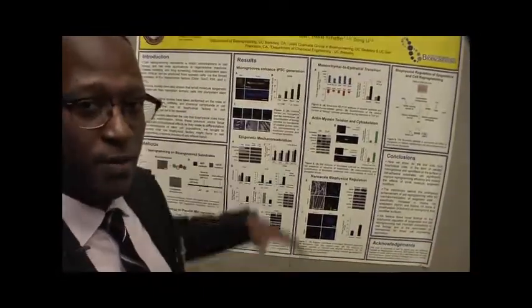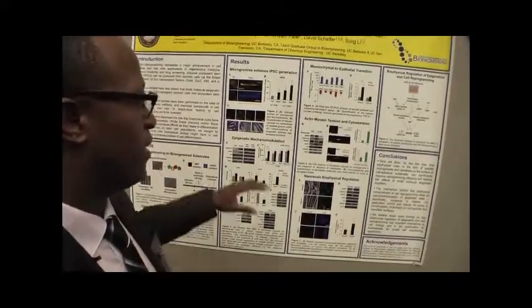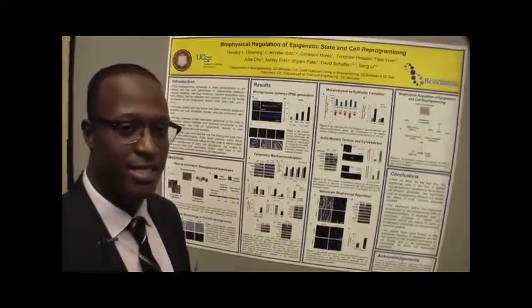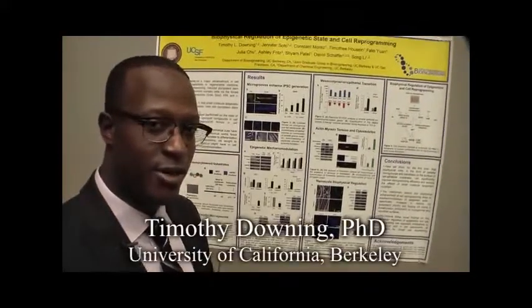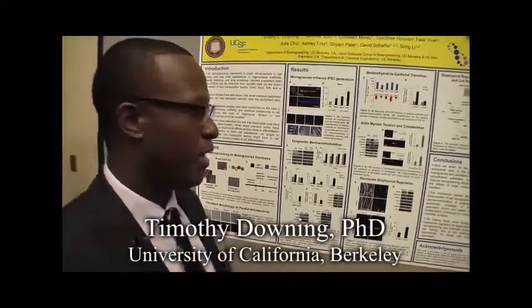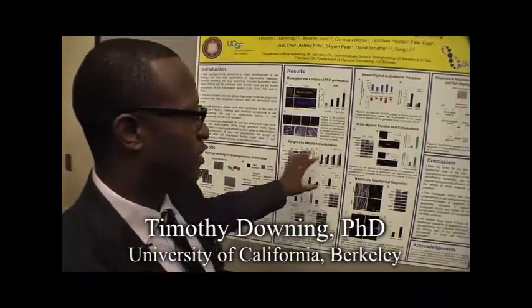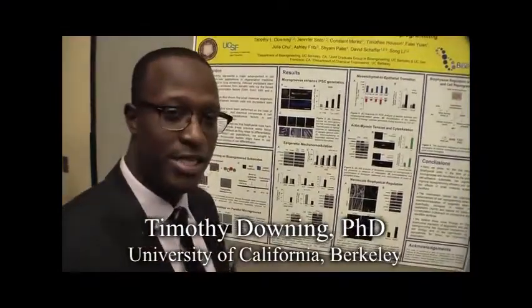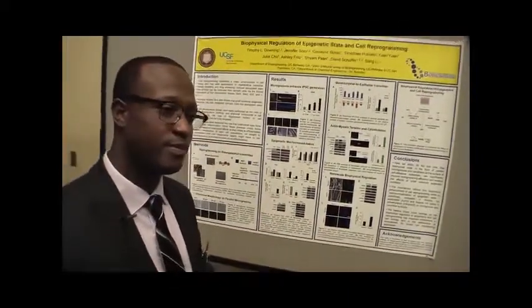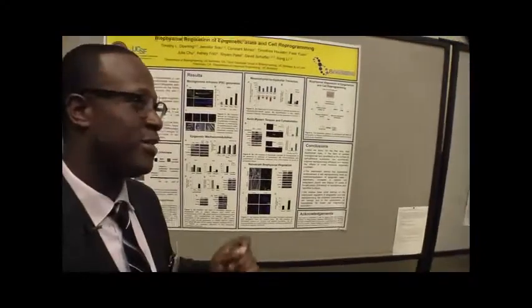For the first time, we're showing a fourfold increase in reprogramming efficiency. We can actually replace the effects of small molecule epigenetic modifiers like valproic acid, which is a histone deacetylase inhibitor, and tranylcypromine, which is a histone methyltransferase inhibitor. So we see dramatic effects on cell reprogramming through mechanisms similar to those of epigenetic-modifying small molecules.